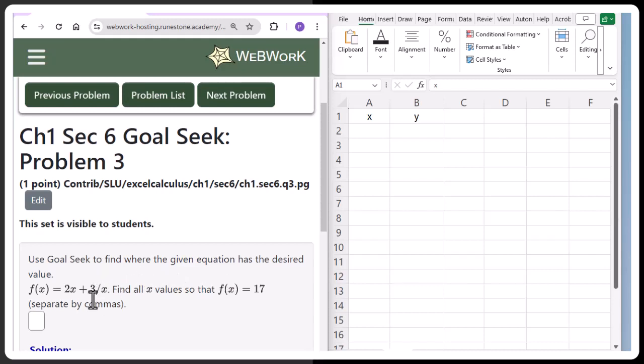Use Goal Seek to find where the equation has the desired value, so we're solving this equation for y equals 17.